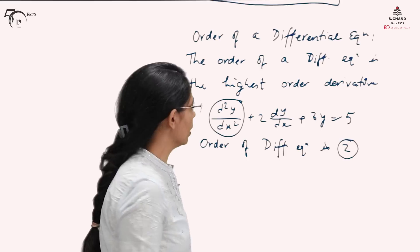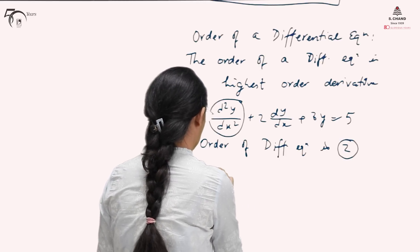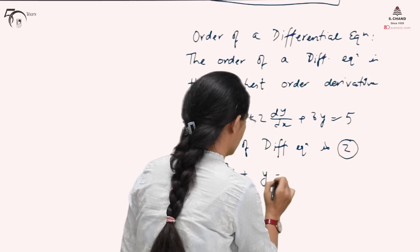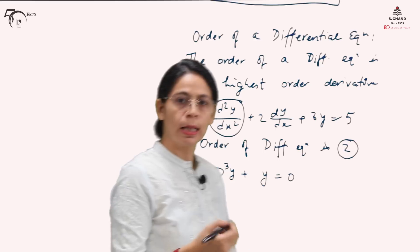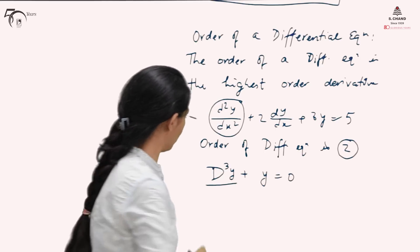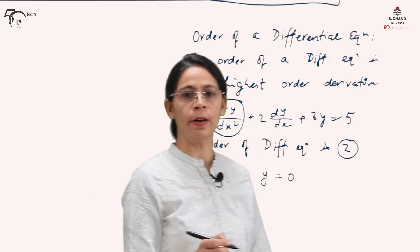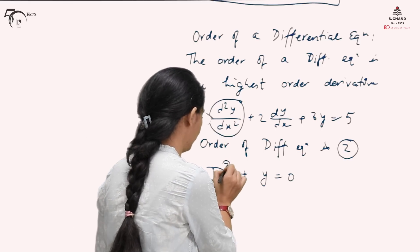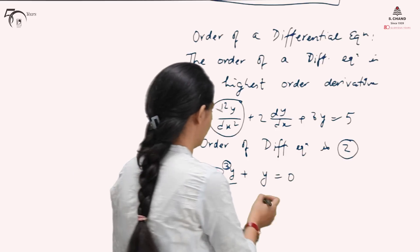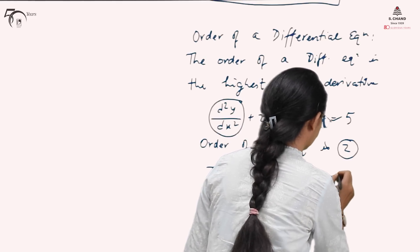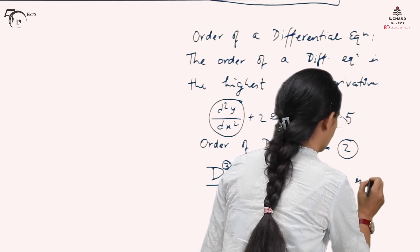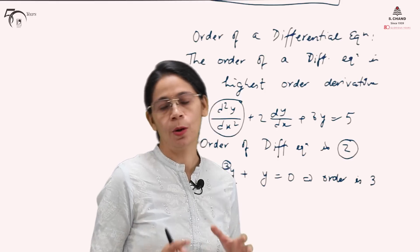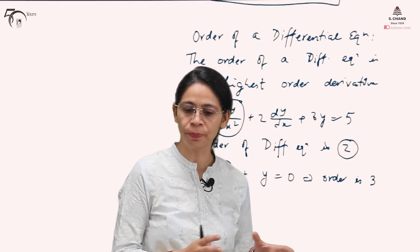Let us take another example. Suppose it is d³y + y = 0. Then in this equation, the derivative of highest order is 3, which is involved in that differential equation. So 3 will be the order of the differential equation. Similarly, we can take many examples to see how the order of a differential equation can be decided.